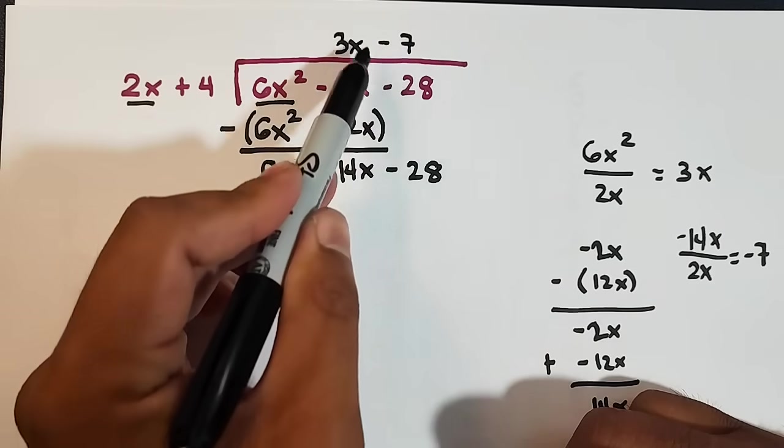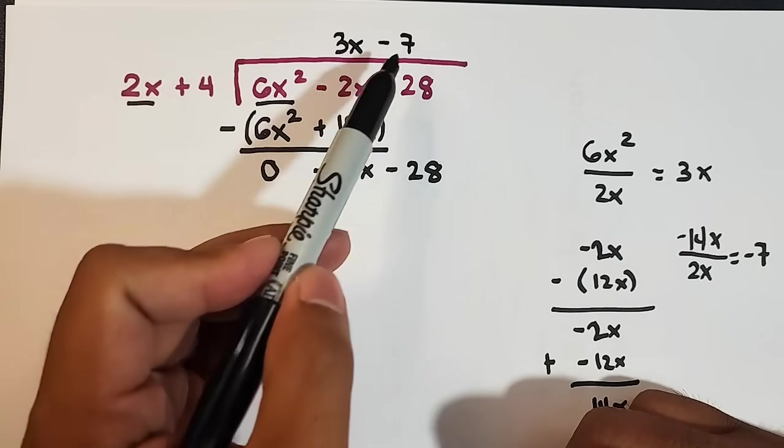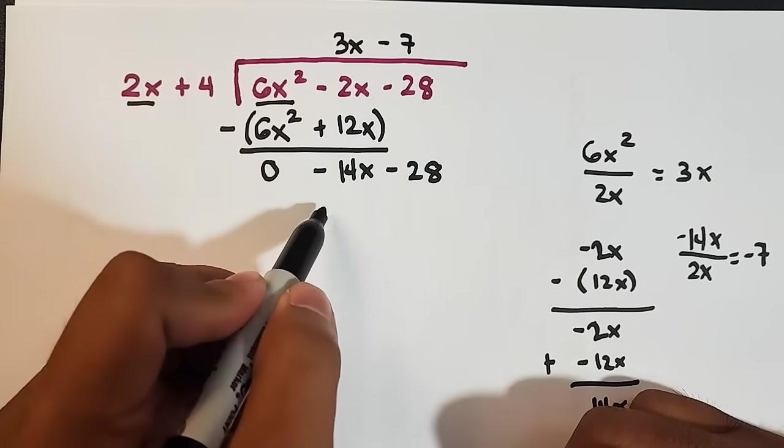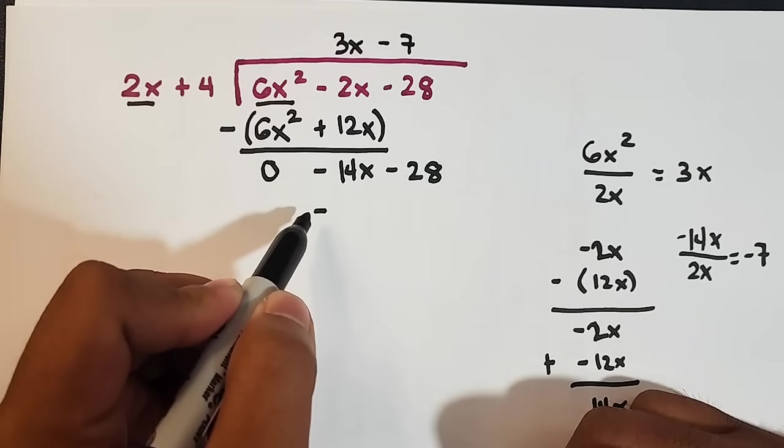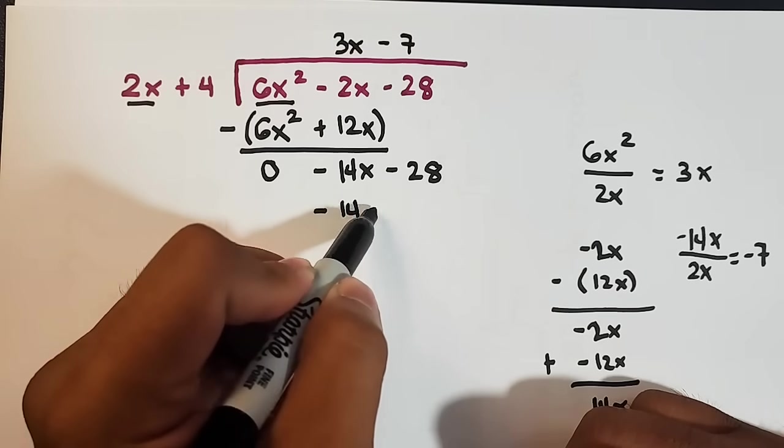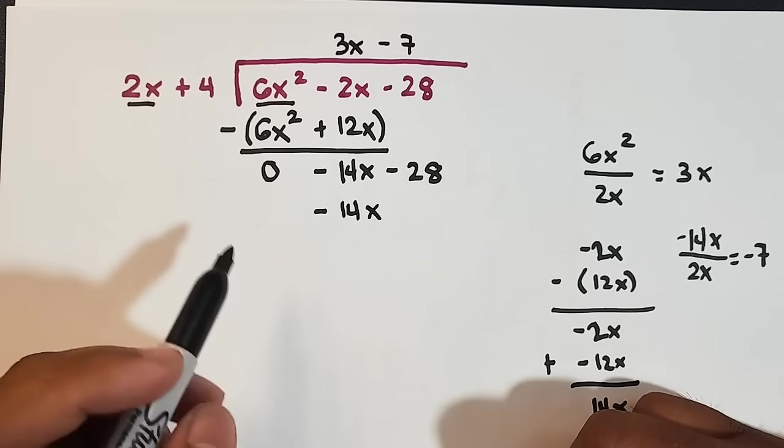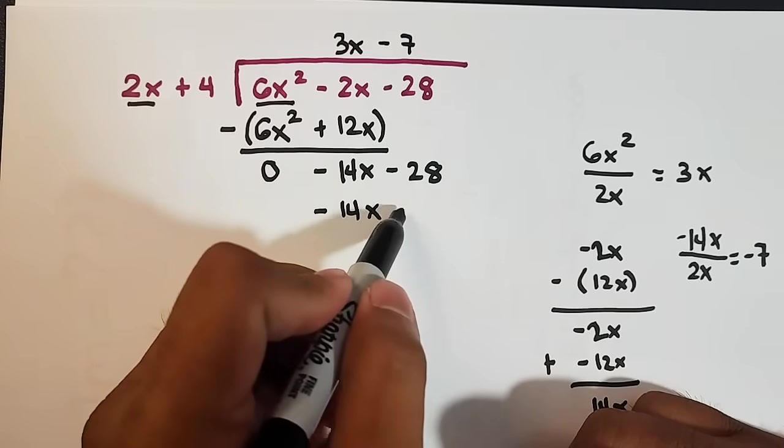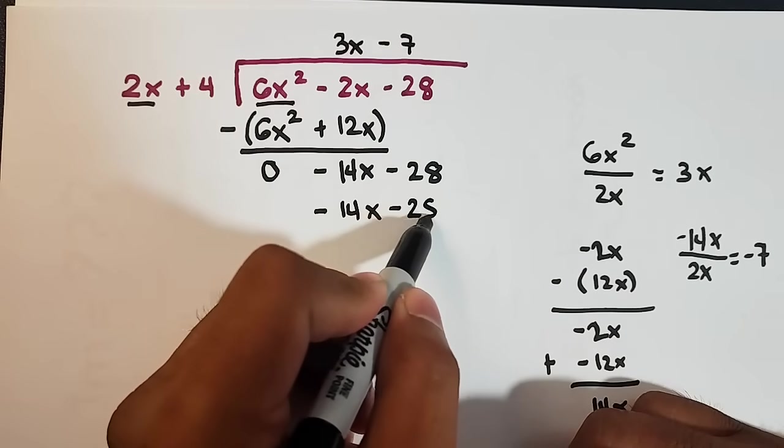So what we have here, after dividing, multiply again. Negative 7 times 2x. That is negative 14x. Next, negative 7 times 4. That is negative 28.